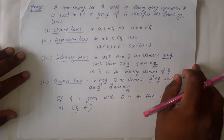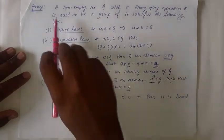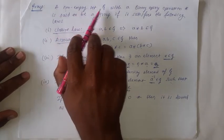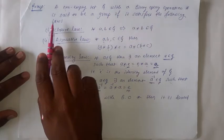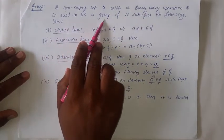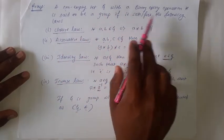Hello dear students, welcome to mathematics class. In this class, let us discuss the Abelian group. Already we know the definition of a group, so here it is the definition of a group. A non-empty set G with a binary operation star is said to be a group if it satisfies the following laws.